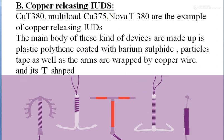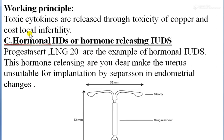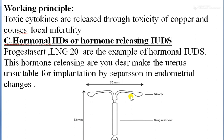The working principle of copper-releasing IUDs is that cytotoxic cytokines are released due to the toxicity of copper. When copper is released into the uterine cavity, this local action — cytokine release — causes local infertility within the uterine cavity.